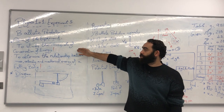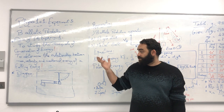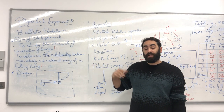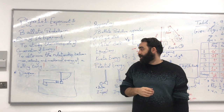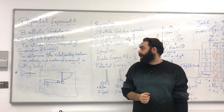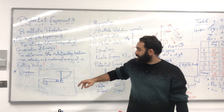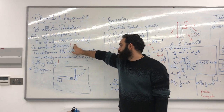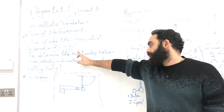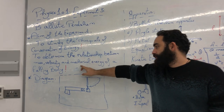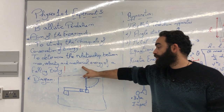The aim of the experiment is to study the principles of conservation of energy, which is the first law of thermodynamics, and to determine the relationship between mass, velocity, and mechanical energy of a falling body. Pay attention — these exclamation marks, and of course this aim, word per word, should be in your report.